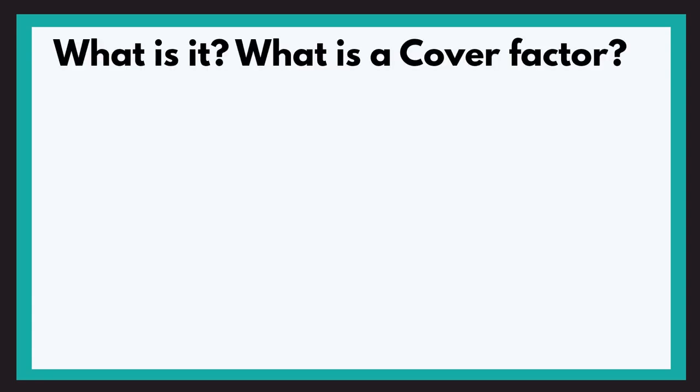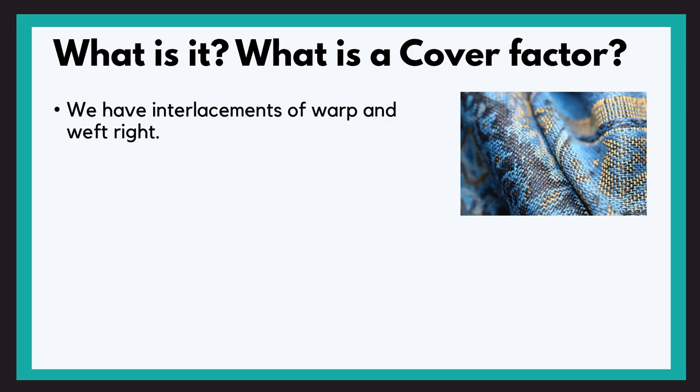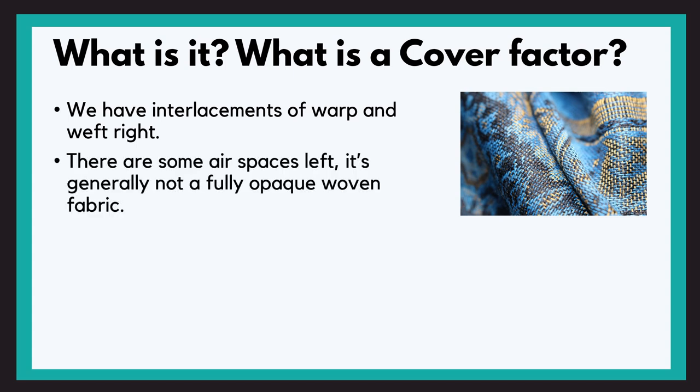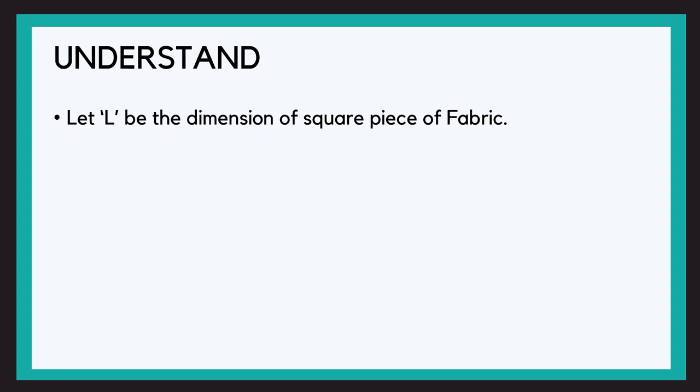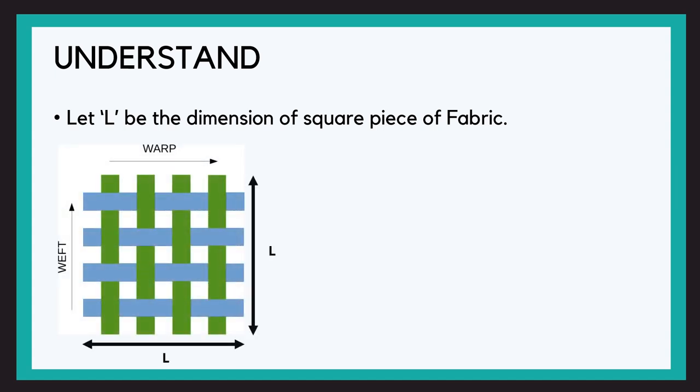So what is a cover factor? We know that in a woven fabric, we have interlacements of warp and weft, right? There are some air spaces. And generally, it's not a fully opaque woven fabric. Now to understand cover factor, let's consider this. Let L be the dimensions of the square piece of a fabric. So the area of the fabric will be L square.